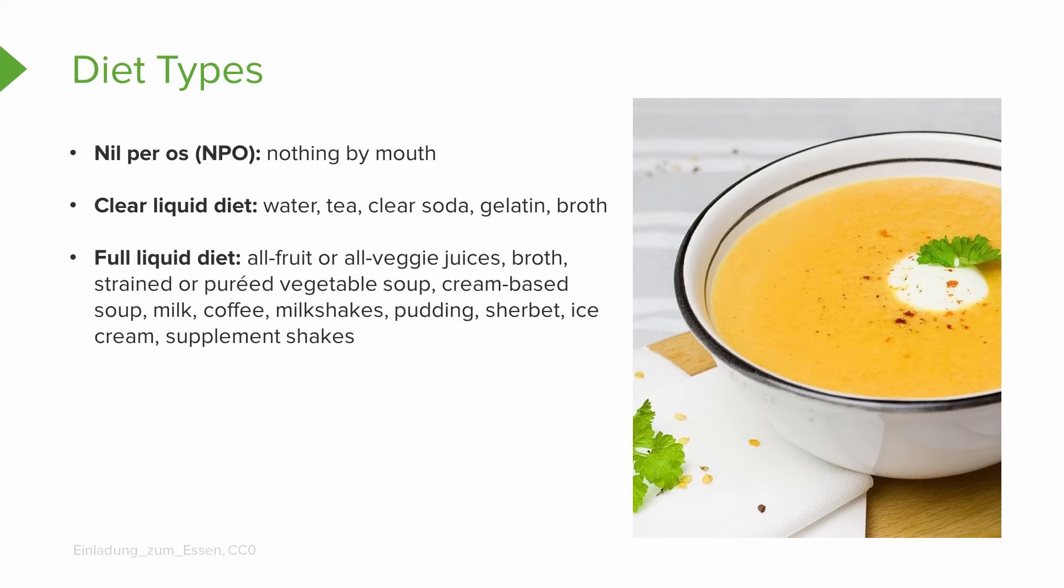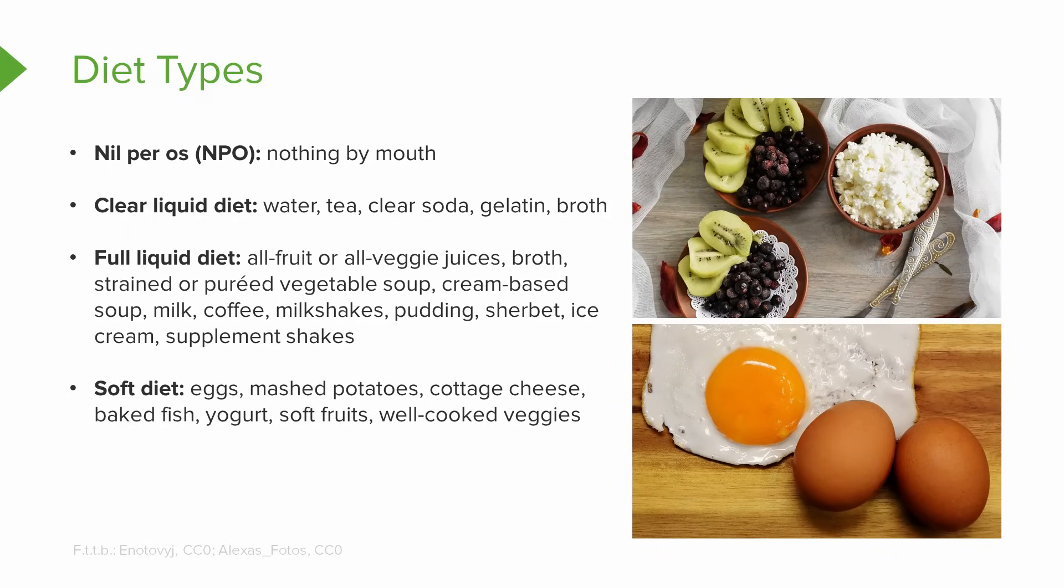If they can tolerate the full liquid diet, we can also use a soft diet. Still easily digestible, but got a little bit more bulk to it. This can include something like eggs or mashed potatoes, even baked fish, soft fruits, well-cooked veggies. Notice, not raw here. Something that's easily digestible for the patient.